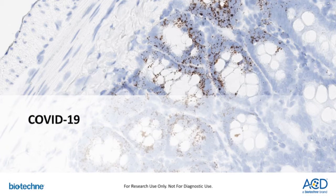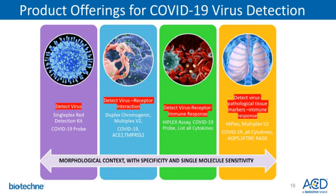Let's move on to look at the COVID-19 offerings provided by ACD's RNA Scope technology. ACD now provides solutions that allow researchers to study the pathogenesis of the virus at various stages. Scientists can detect the actual virus using probes for COVID-19 in both sense and antisense format, detecting both resting and replicating stages. Secondly, the virus-receptor interaction with probes available for ACE2 and TMPRSS2. Thirdly, the immune response mounted as a result of COVID-19 infection. And finally, using high-throughput assays such as HiPlex and Multiplex V2 format, researchers can visualize all of these together — all confirmed on a morphological context at single-cell resolution.